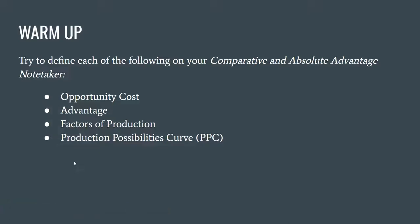For this lesson on comparative and absolute advantage, we need to do a quick refresher on four big vocab terms we've covered earlier in the semester. Those four terms are opportunity cost, advantage, factors of production, and production possibilities curves. I'm going to encourage you to pause the video now and take a guess at what each of these four terms mean. See if you can think back to the definitions we talked about in class.